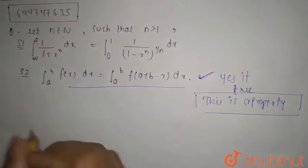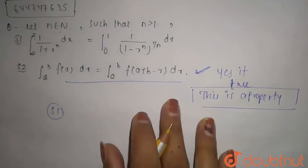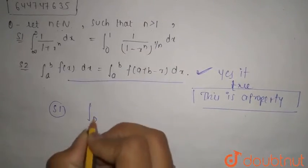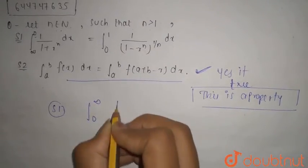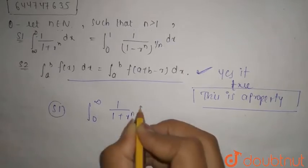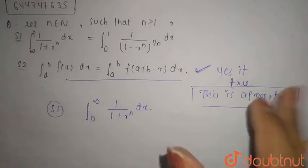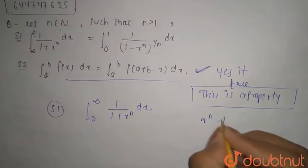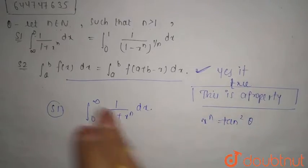Now I was talking about statement number 1. Statement number 1 says that integration 0 to infinity, 1 upon 1 plus x to the power n dx. Let's put x to the power n is equal to tan square theta.